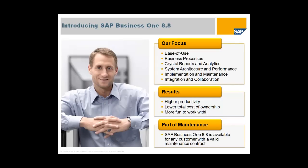Our focus in developing SAP Business One 8.8 has really been on six key areas: ease of use, making the solution even easier to use; enhancing and expanding business processes; integrating Crystal Reports and embedded analytics as part of the SAP Crystal solutions; and incorporating feedback from more than 25,000 customers and more than 1,400 partners around the world to build enhancements to systems architecture and performance.